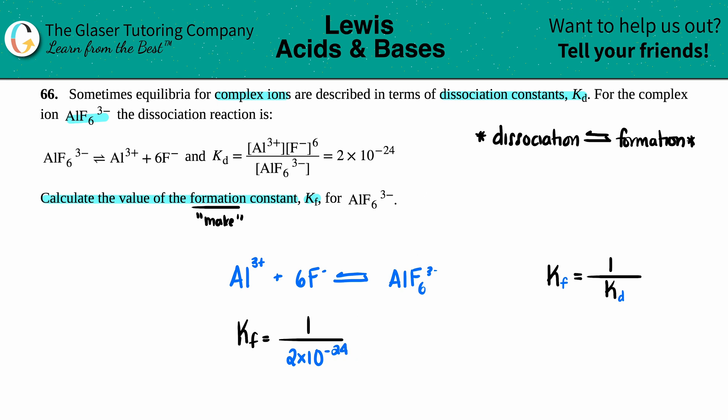Now let's do the math. One divided by 2×10^-24 is 5×10^23. That's your formation constant, 5×10^23, for this complex ion AlF6^3-. And that's it.